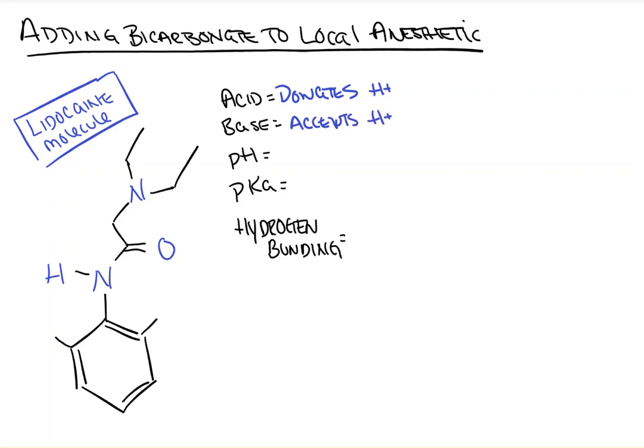Next, the pH, which is the negative log of the concentration of hydrogen ions. So really it's just a value that denotes how many protons are floating around. The lower the pH, the more protons, the more acid present in the solution.